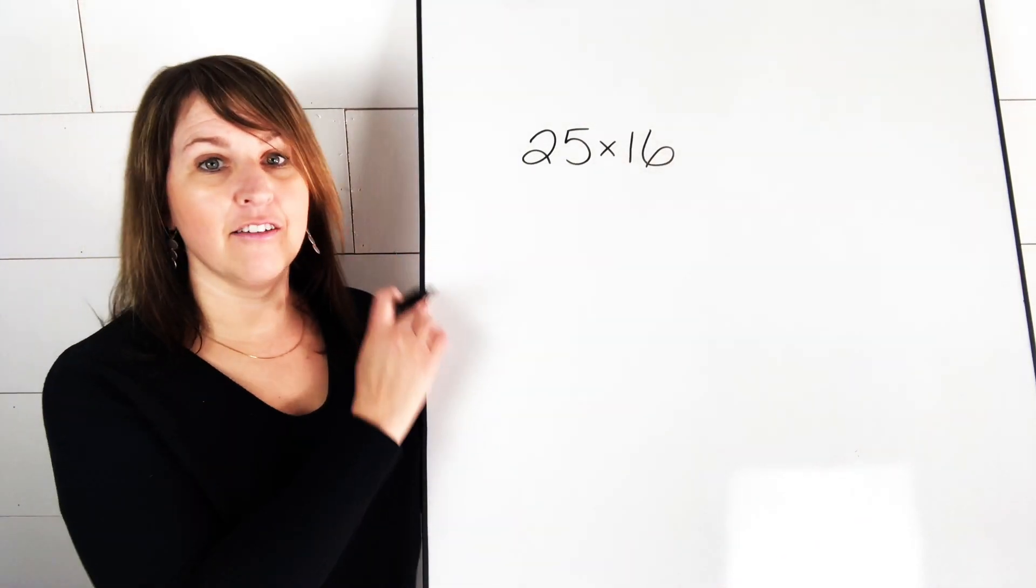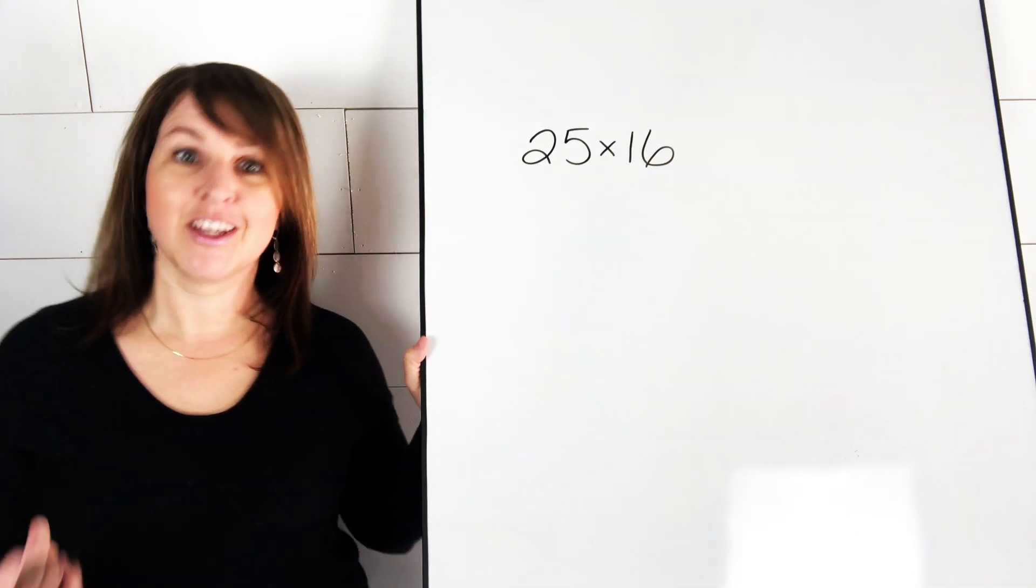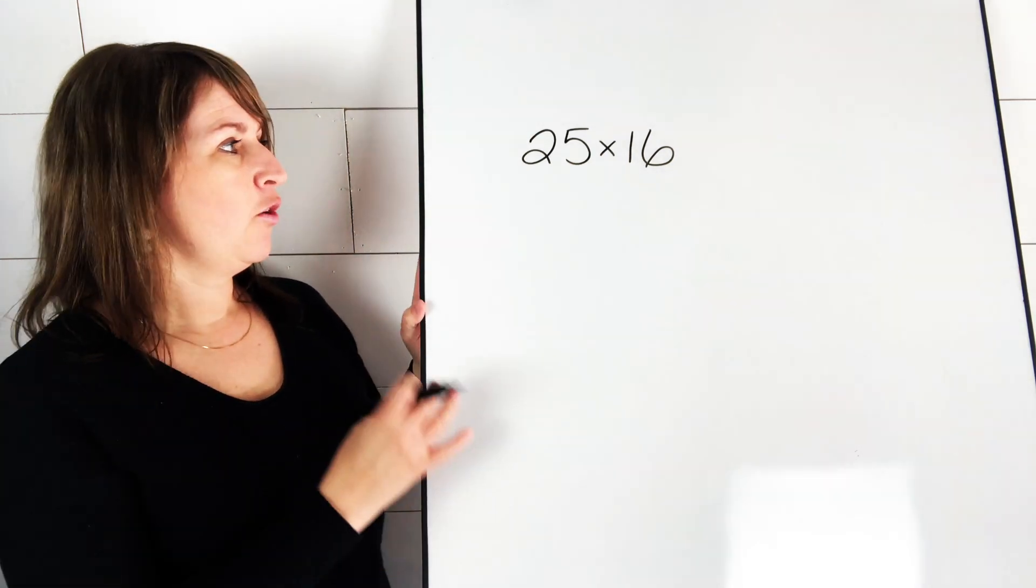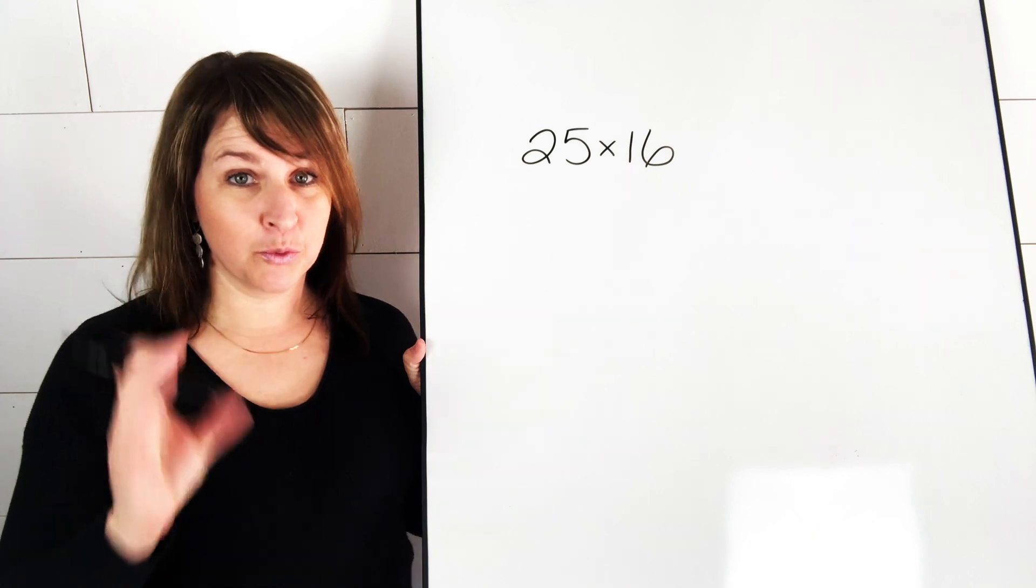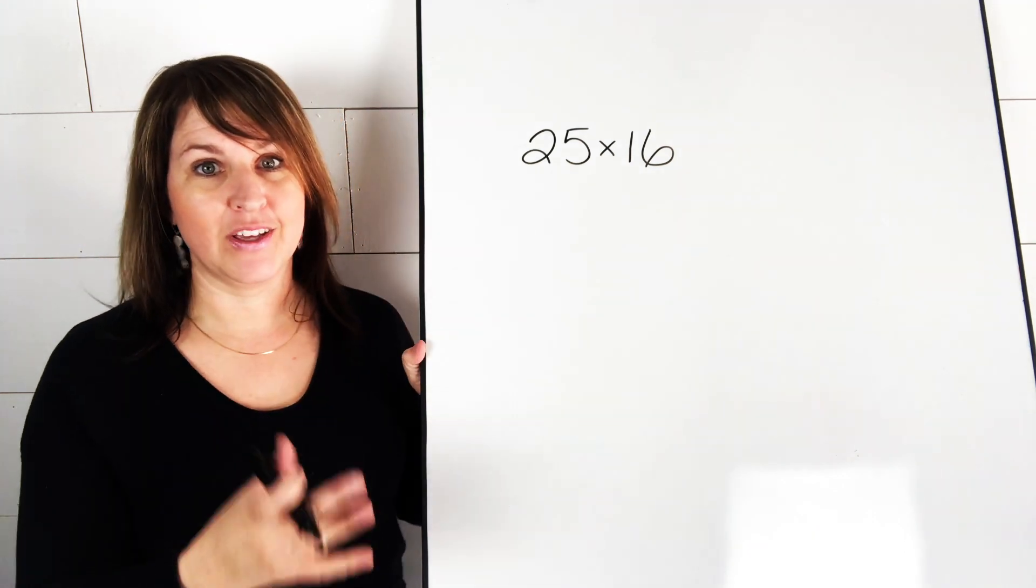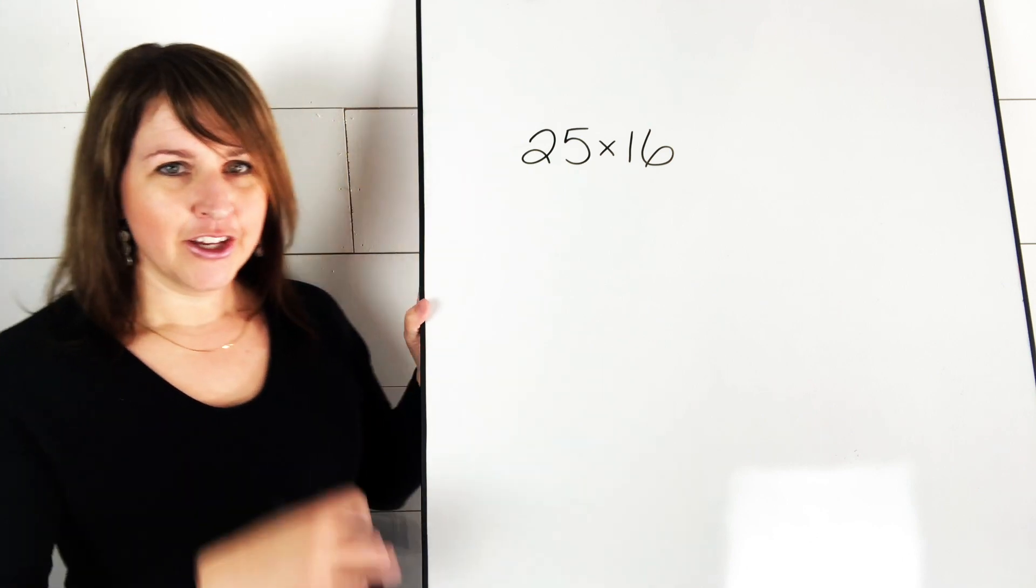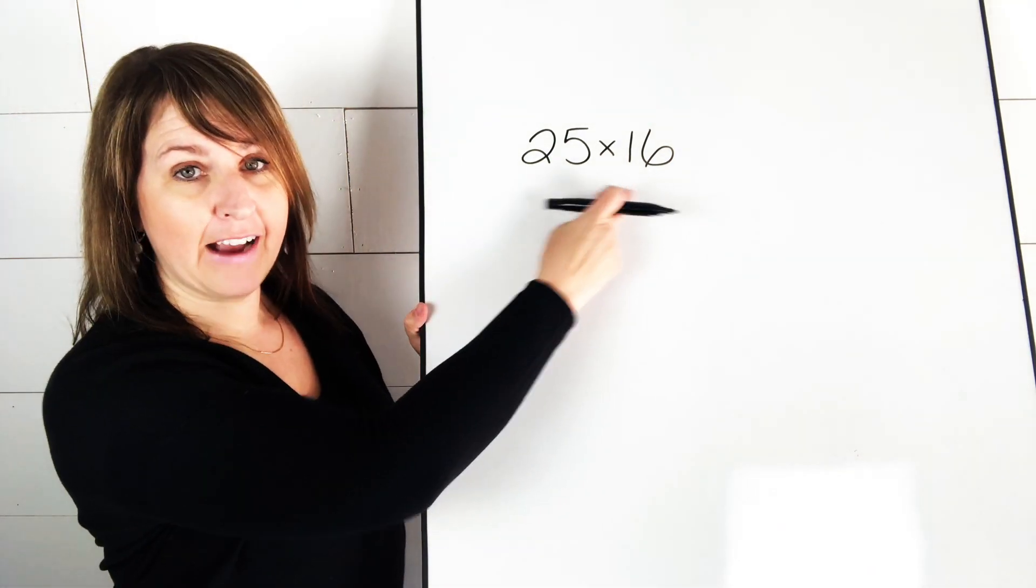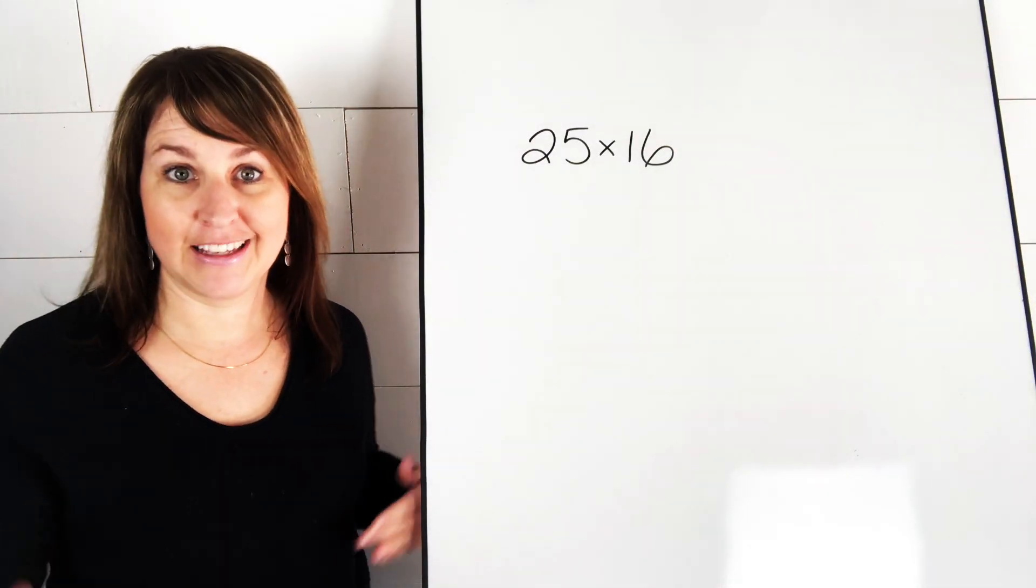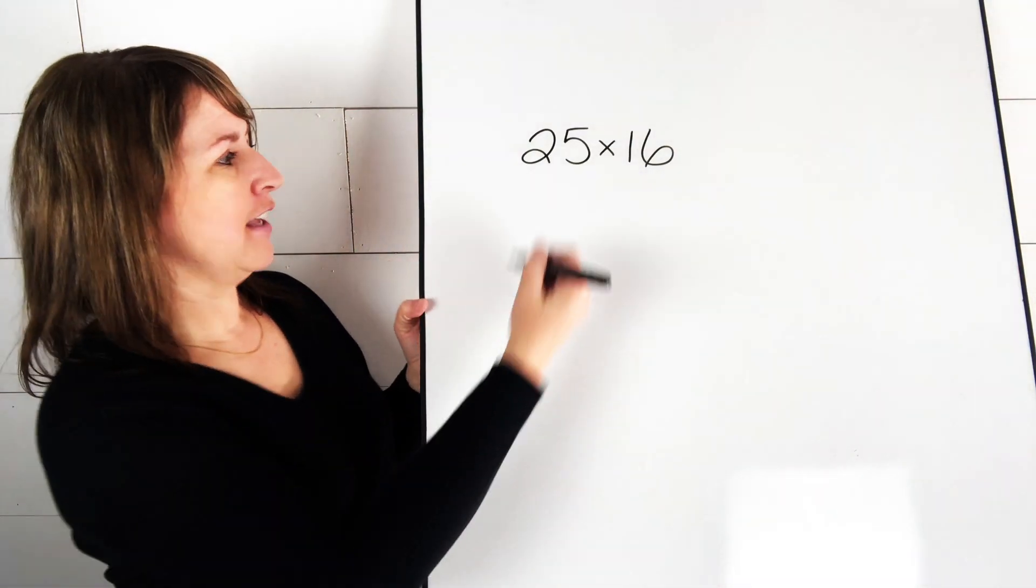Okay, so let's say we have a problem like 25 times 16 to solve. Now, this is actually going to be really simple, and there's a few ways to do this. But this way that I'm going to show you today is called doubling and halving. So what we do is we pick one of the factors to double, and then we have to split the other factor in half. And I'll show you what that looks like.